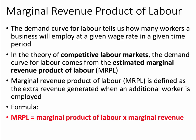Marginal Revenue Product of Labour, MRPL, is defined as the extra revenue generated when a firm employs an additional worker. There is a formula for this: it's the marginal product of labour multiplied by the marginal revenue of the output that the worker creates.